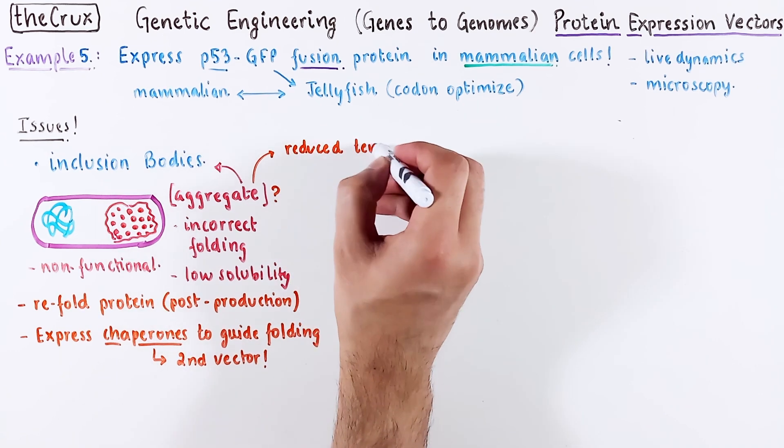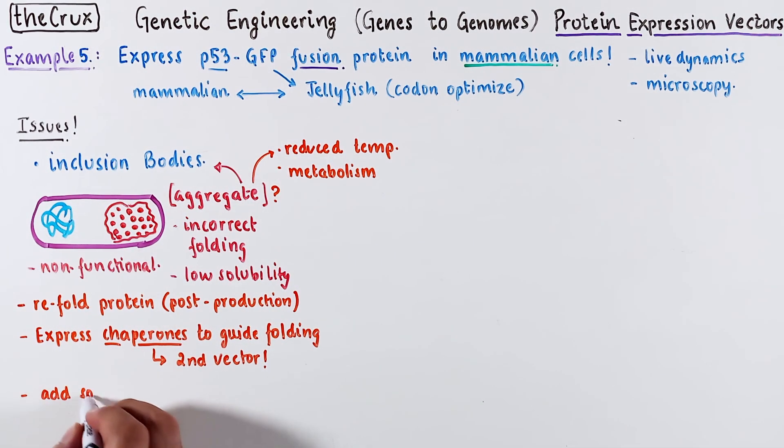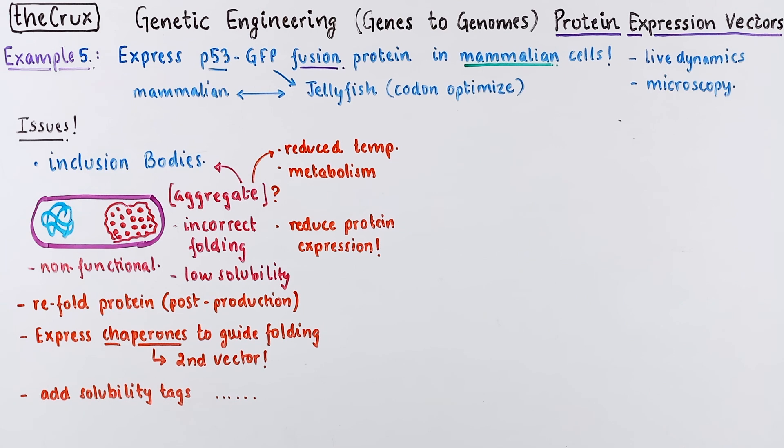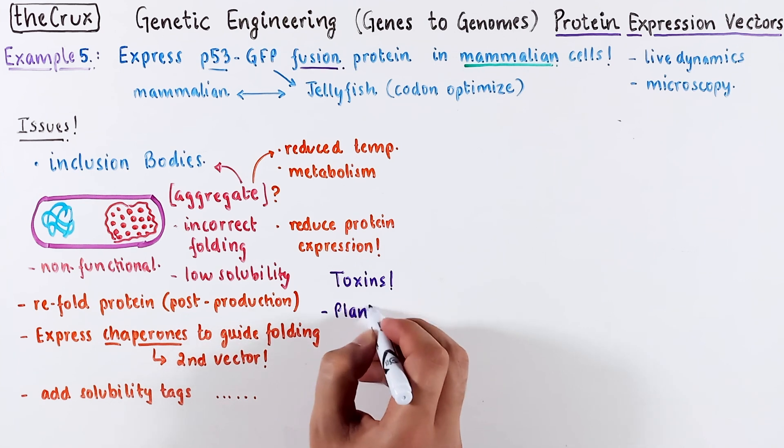Alternatively, you could lower the growth temperature to decrease metabolism. Sometimes it helps in protein folding. If solubility is a problem, maybe add a solubilization tag. Or cut back on the expression intensity, sometimes less is more. The wild card scenario is production of toxins. Plants can find some use in toxin production.